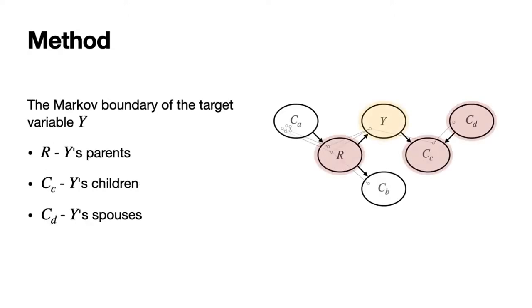Considering our goal, we expect to extract the most informative features for prediction, which means that all other variables are independent of the target variable when conditioned on this feature set. Generally, under certain assumptions, such minimal feature set is the Markov boundary of the target variable Y, including Y's parents R, Y's children CC, and Y's spouses CD.